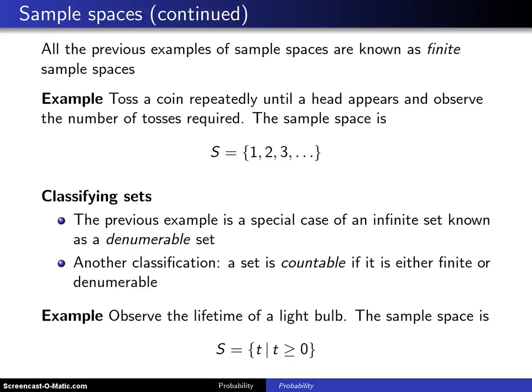All of the examples on the previous slide contain sample spaces which are known as finite sample spaces. They are finite because if you count the number of outcomes in the sample space, in the first case we had six different outcomes, in another example we had 36 different outcomes, sometimes there were three different outcomes, but there was always some finite number of outcomes in the sample space.